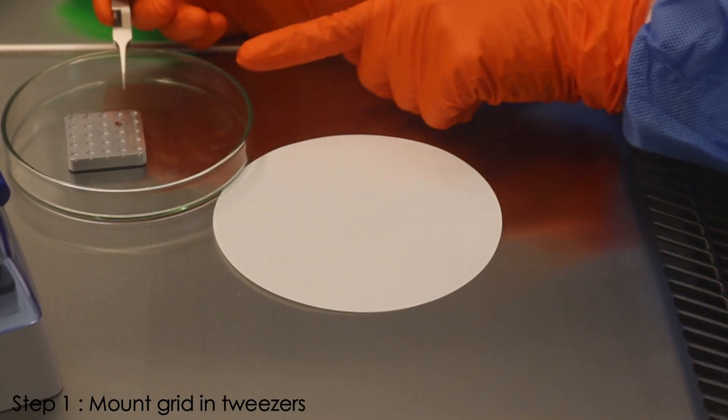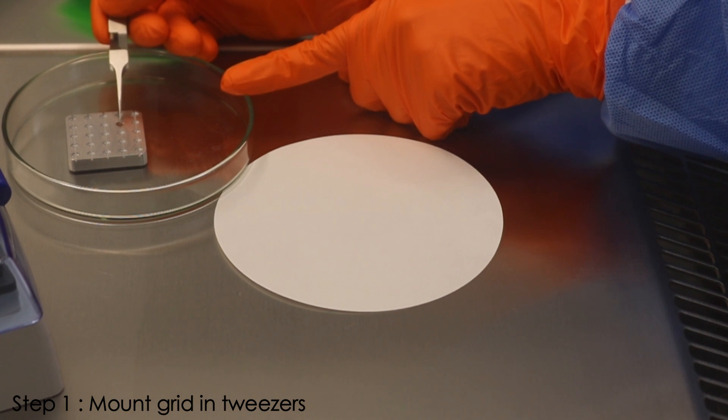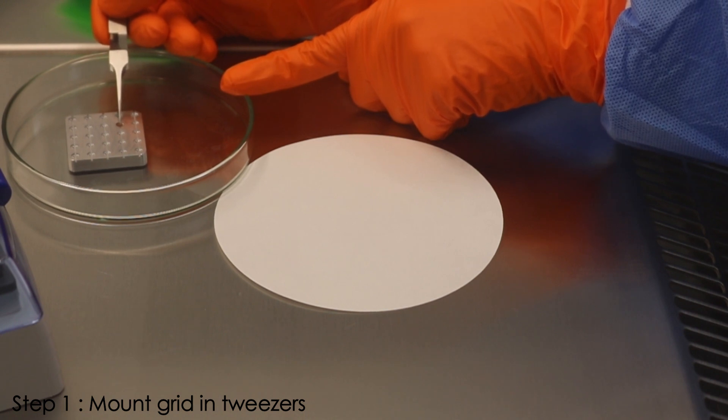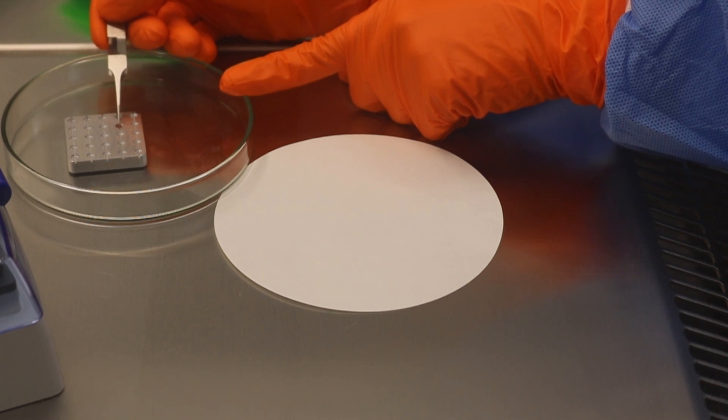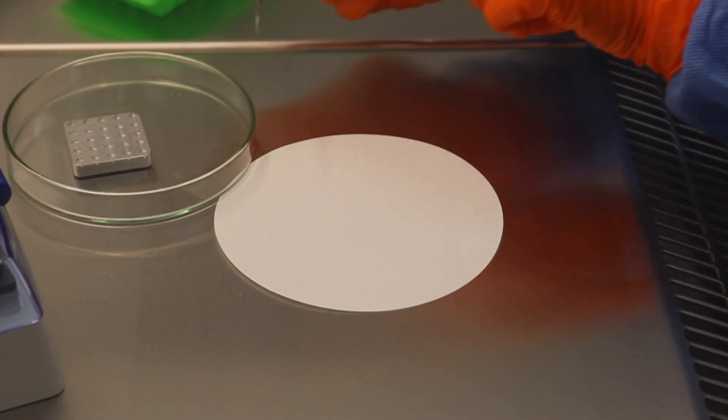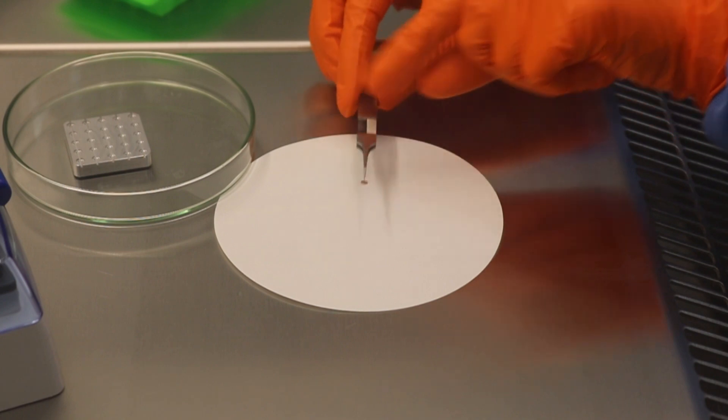First, pick up the grid by the edge, avoiding the mesh area. Mount a hydrophilized grid onto the inverted tweezers. This enables the grid to be stable during the entire procedure. Be sure the carbon side of the grid is facing up.